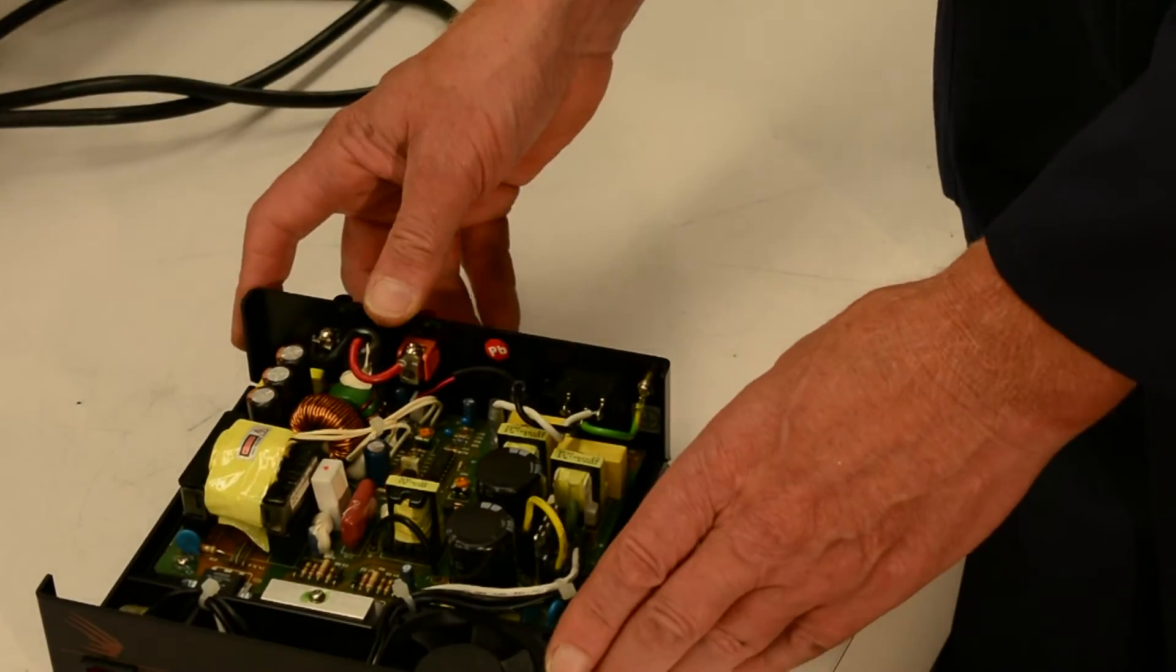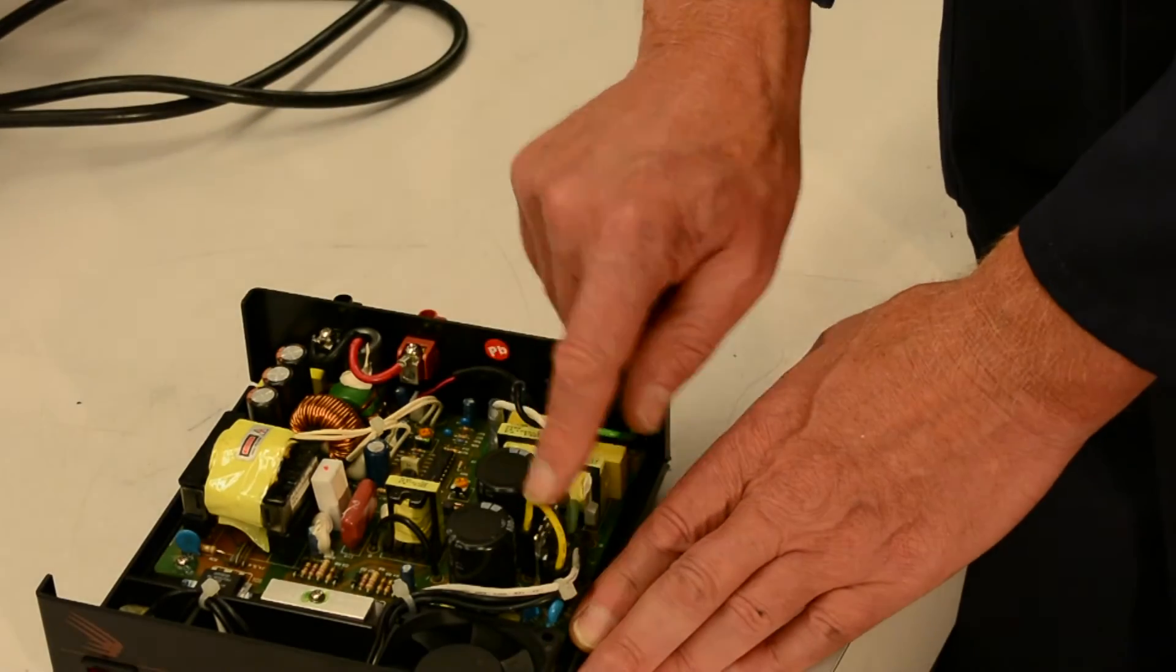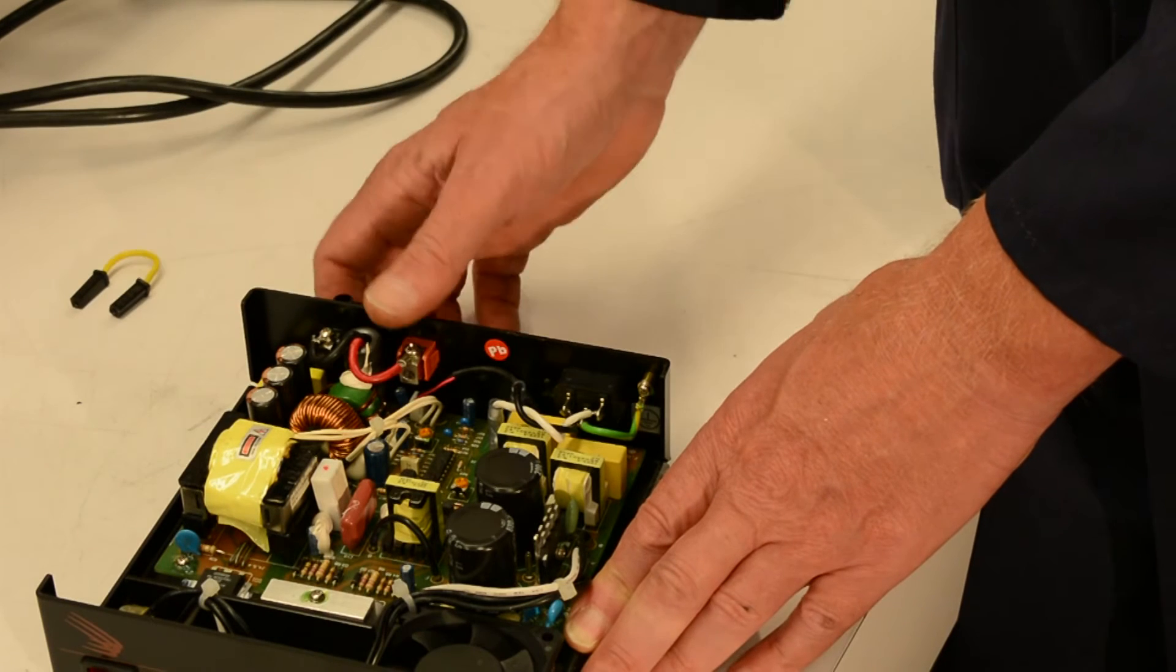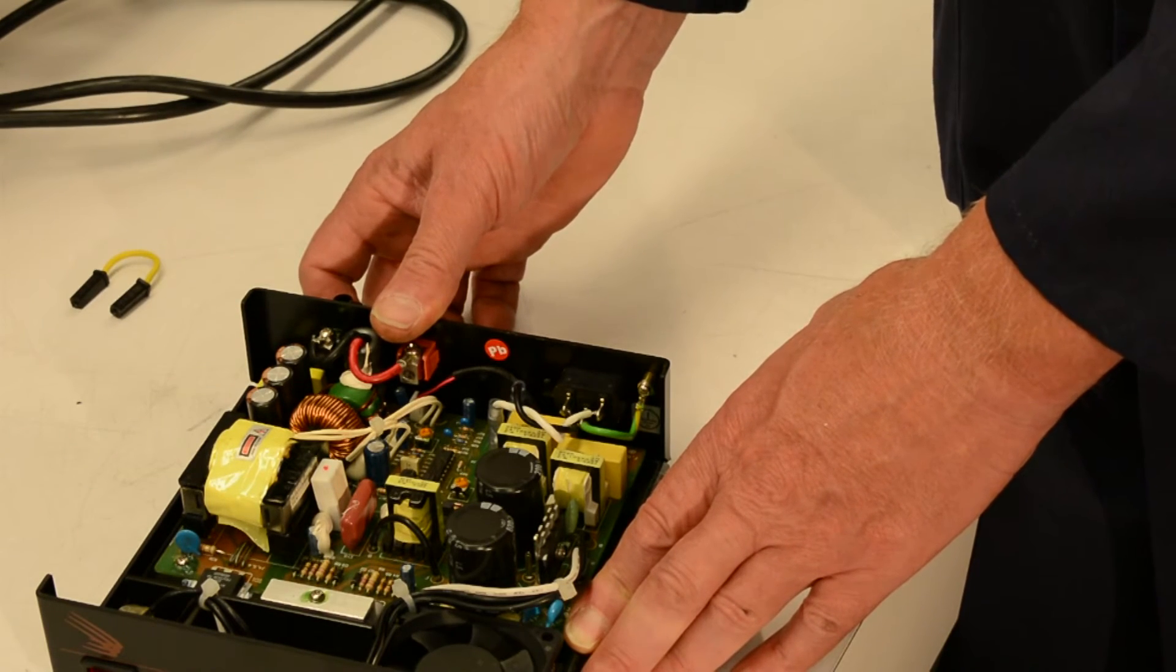The jumper that has to be removed is this yellow one right here. Simply pull it off and you'll be enabled for 240 volts.